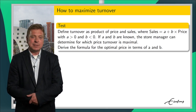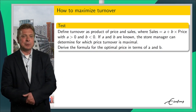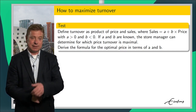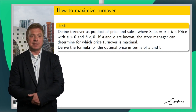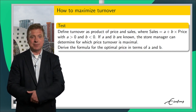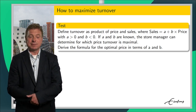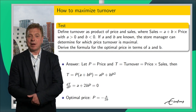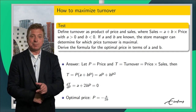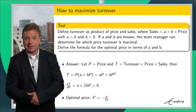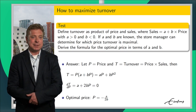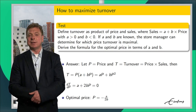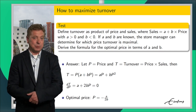Now consider the following test question. Suppose you are interested to find the price that maximises turnover, where turnover is defined as the product of price and sales. How can you find that price from the relation sales = A + B times price? The answer is: as turnover is price times sales, or A times price plus B times price squared, the derivative of turnover with respect to price is equal to A plus 2 times B times price. Setting this equal to zero gives an optimal price of minus A divided by 2B.